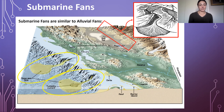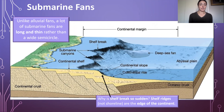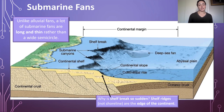One way submarine fans differ from alluvial fans is that many submarine fans are long and thin rather than wide semi-circles. This is likely because water allows grains to remain suspended for longer periods, stretching out the depositional system. The steepness of the slope also drives forward momentum in submarine fan deposition. These slopes start at the shelf edge — the edge of the continent — after which you have very thin oceanic crust, creating a dramatic change in topography similar to mountain-adjacent environments where alluvial fans form.